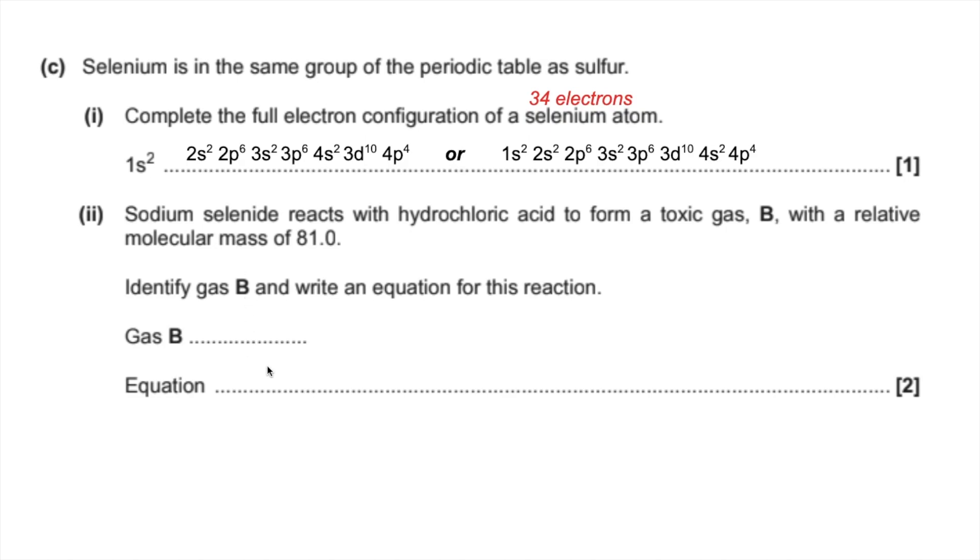So the first thing I'm going to do is begin the equation. So it's Na2Se plus HCl. We're then told this gas B is a toxic gas. So the fact that it's a gas, it must be a simple covalent molecule, low boiling point. So therefore, it's going to be made from non-metals. So basically, we're ruling out sodium in the formula.